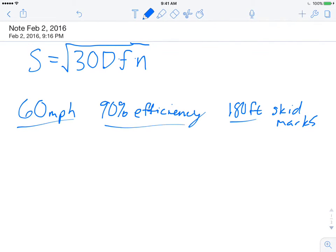So again, we're going to basically put in here what we know and solve for what we don't know. What we do know is that the speed is 60 miles per hour. We know that the D, the distance, is 180 feet. And we know that the efficiency is, so we don't know F, but we do know that the efficiency is 90%, so 0.90.